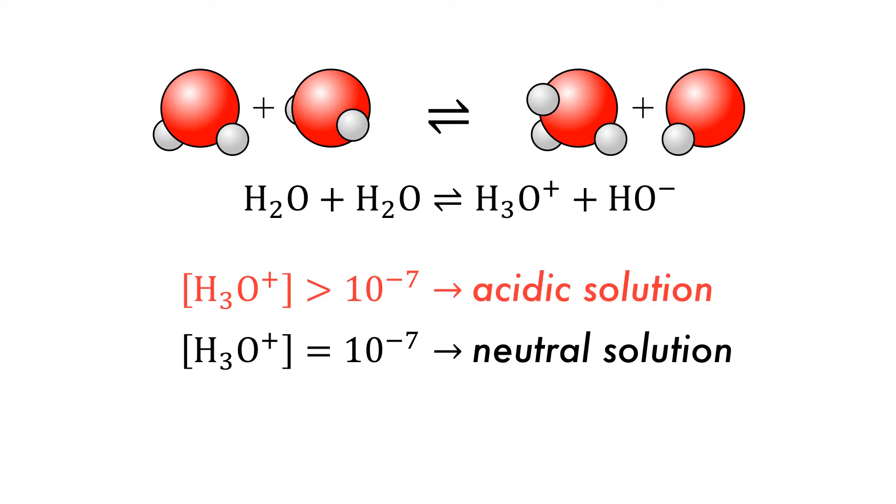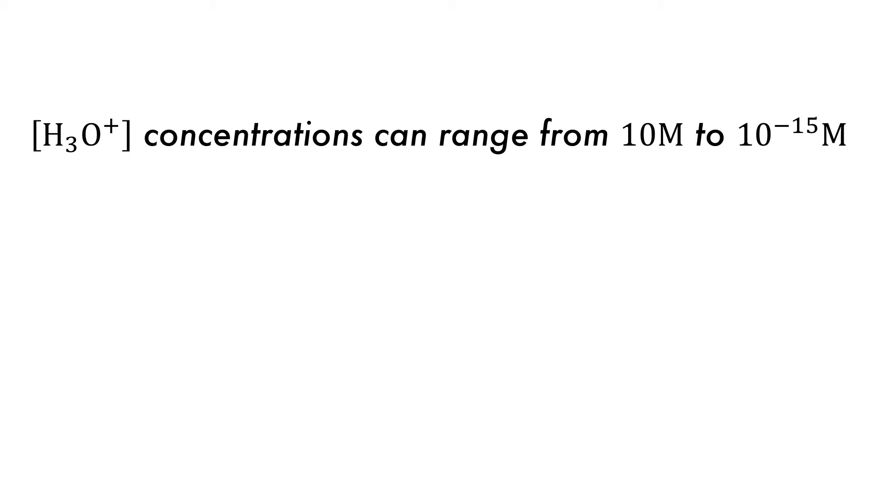If the proton concentration is above 10 to the minus 7, then the solution is acidic and basic if below 10 to the minus 7. In aqueous solutions, the concentration of the hydronium ion can vary from 10 moles to less than 10 to the minus 15 moles. To handle these numbers conveniently, they are converted to the p-scale, which is the negative common logarithm of the number.